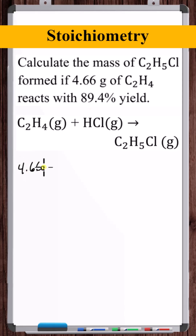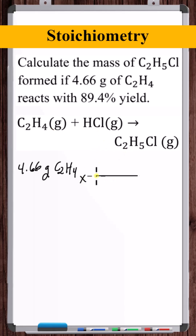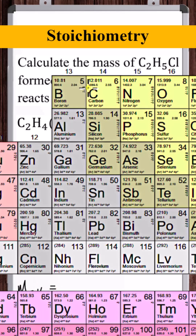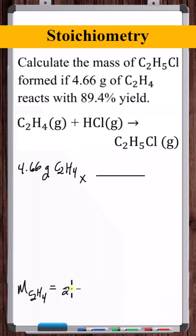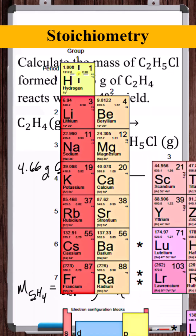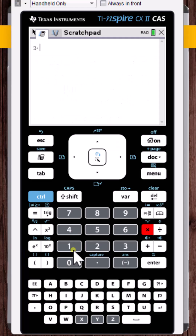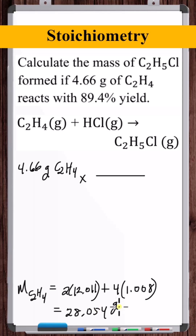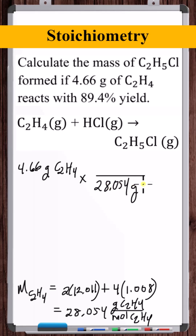We're starting with 4.66 grams of ethylene. We want to convert this to moles so we can move to another substance in the chemical reaction. To convert to moles we need the molar mass of ethylene. The atomic weight of carbon is 12.011 and hydrogen is 1.008, giving us 28.054 grams of ethylene per mole of ethylene.